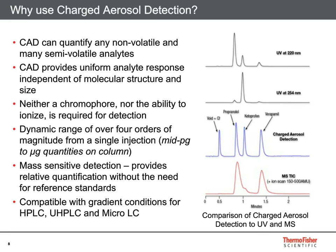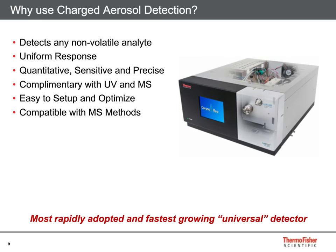Looking at each chromatogram, each detector shows variable response for each compound. Chloride is not detected at all by UV or MS under these conditions. UV shows poor response for verapamil, while MS detection shows poor response to ketoprofen. Only the charged aerosol detector shows good response for each compound with more uniform responses than the other detectors. The response of the charged aerosol detector is proportional to the mass injected, typically from low nanogram to mid-nanogram amounts. You would use it if you want to detect every non-volatile analyte, value uniform response, require sensitive and precise quantitation, and desire ease of use.